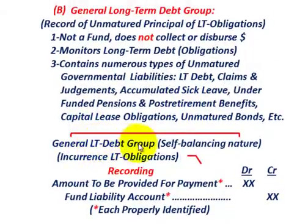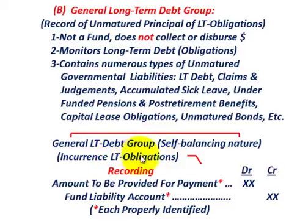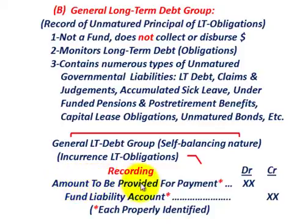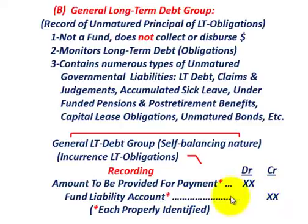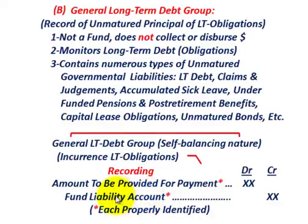The general long-term debt group has a self-balancing nature. At the incurrence or issuance of some long-term obligation or long-term debt, this is the recording we do. You'd have the amount to be provided for the payment as a debit, and then your credit would go to a fund liability account. Each would be properly identified. When dealing with governmental accounting, you're going to have a lot of definitions, and they have to be identified — in this case, the fund liability and the amount to be provided.